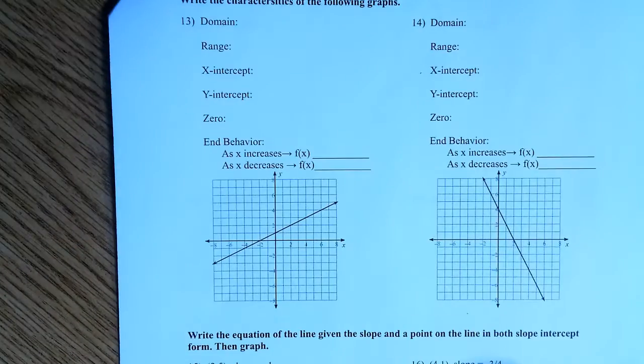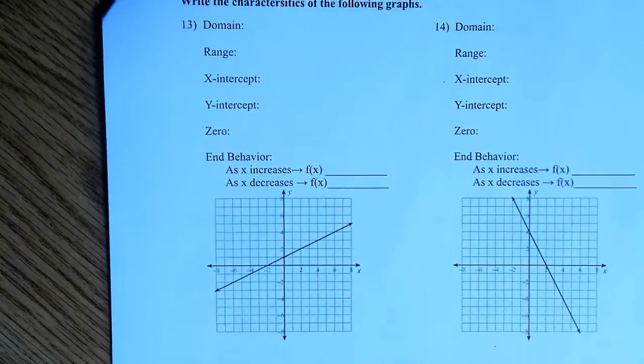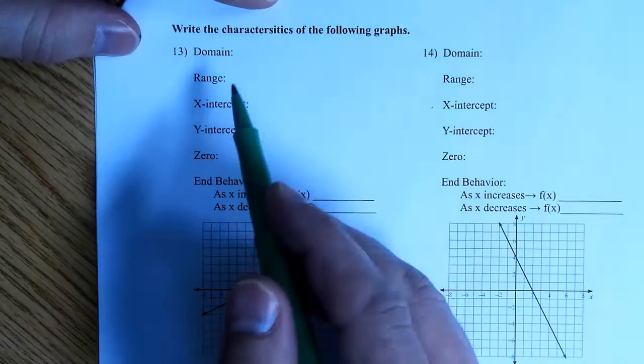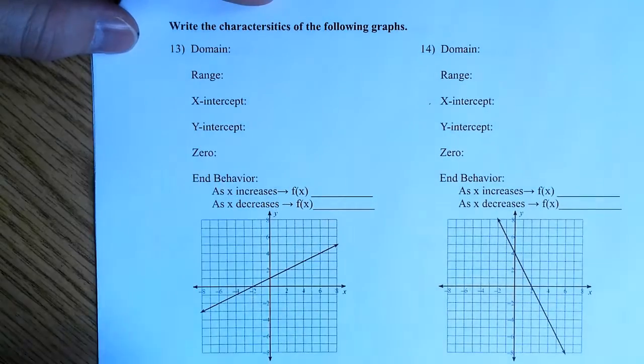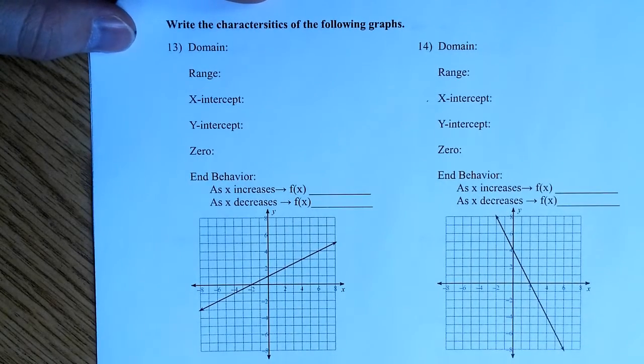I just want 13 and 14 here. Characteristics of a graph. So for both of these graphs, just to let you know, the domain and range are always the same thing. What's the domain and range here?